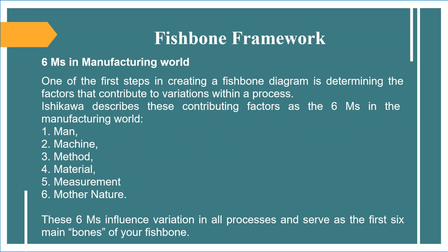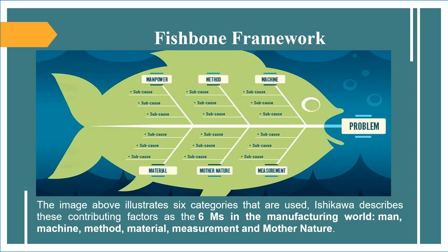Six Ms in the Manufacturing World. One of the first steps in creating a fishbone diagram is determining the factors that contribute to variations within a process. Ishikawa describes these contributing factors as the six Ms in the manufacturing world: 1. Man, 2. Machine, 3. Method, 4. Material, 5. Measurement, 6. Mother Nature. These six Ms influence variation in all processes and serve as the first six main bones of your fishbone diagram.